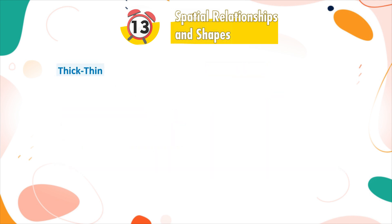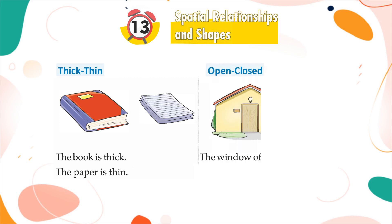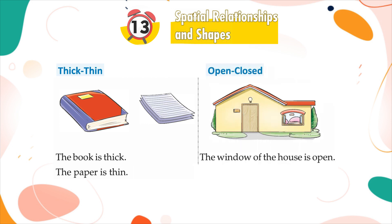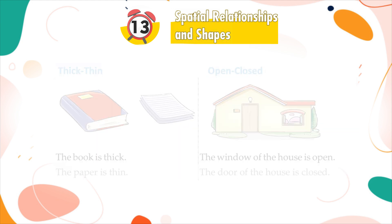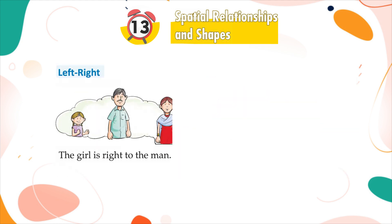Thick, thin: The book is thick. The paper is thin. Open, closed: The window of the house is open. The door of the house is closed. Left, right: The girl is right to the man. The woman is left to the man.